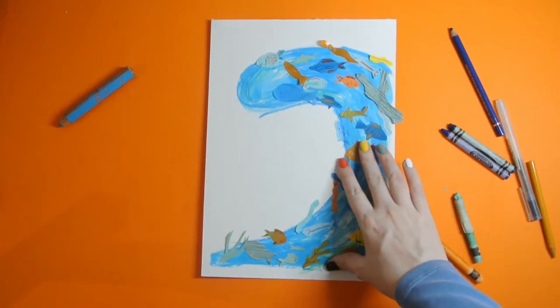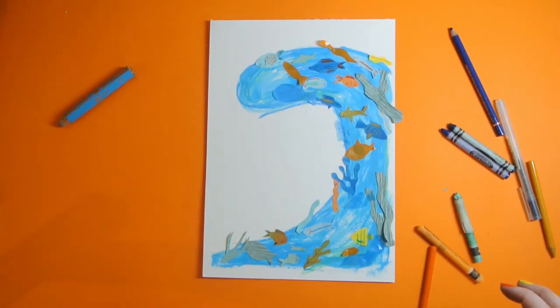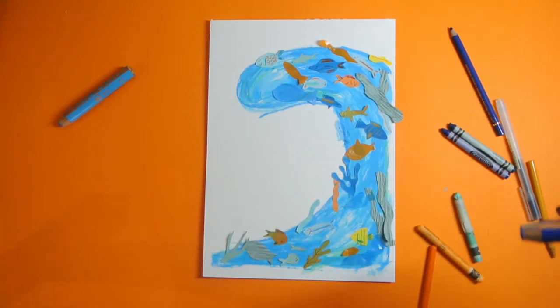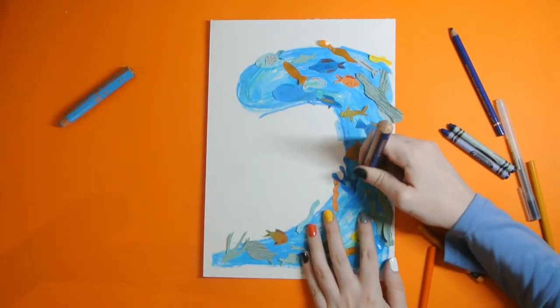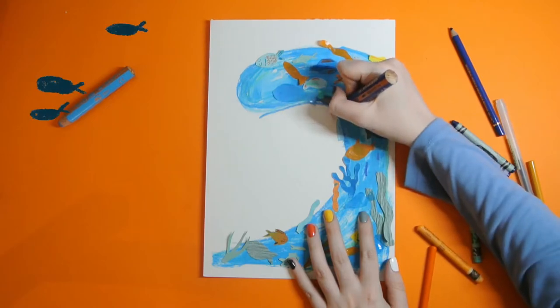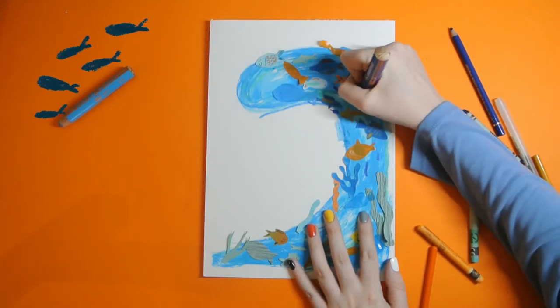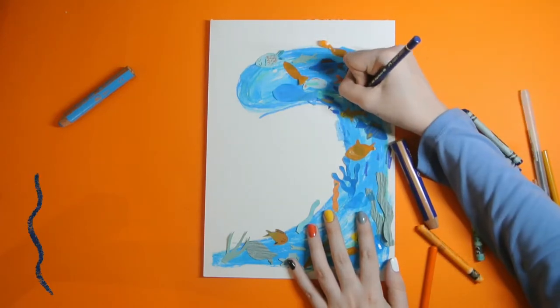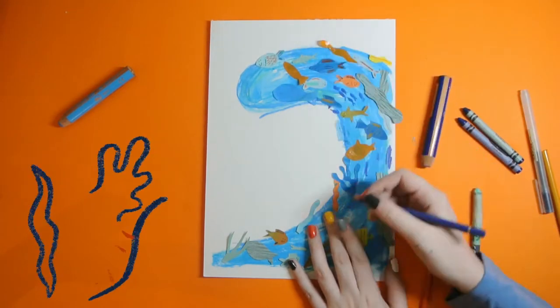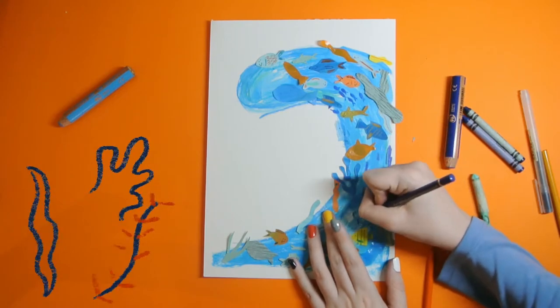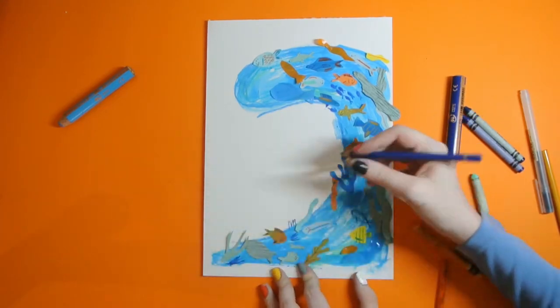So once those are all stuck down we can start working back into it using some darker shades of blue, creating more things going on in the Giant. So little schools of fish. They can be quite simple, they don't have to be detailed. Some more wiggly plants, like seaweed and anemones. Anything that goes on under the sea.